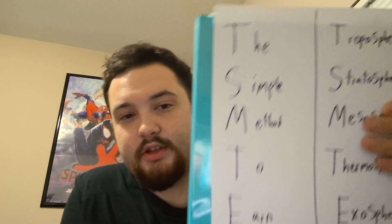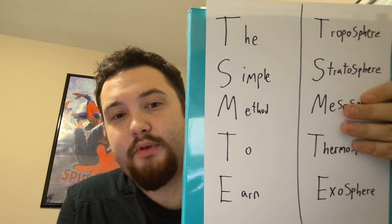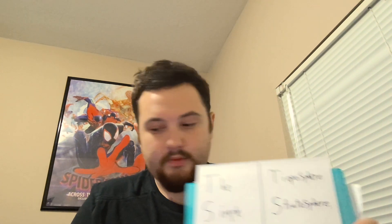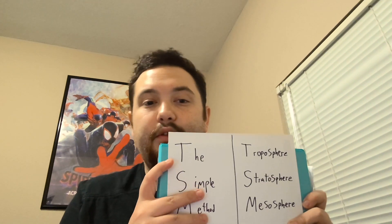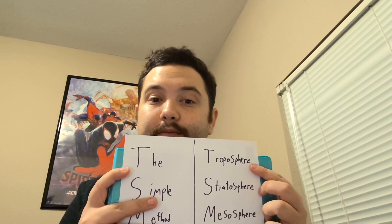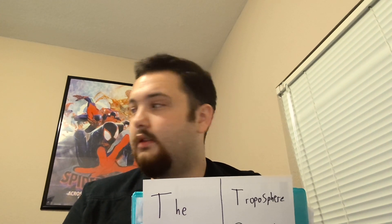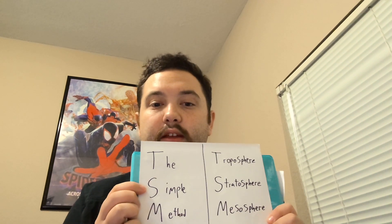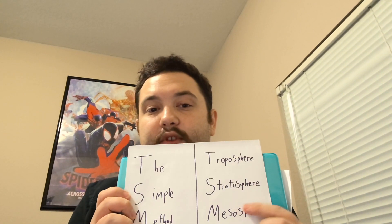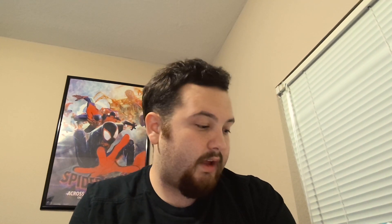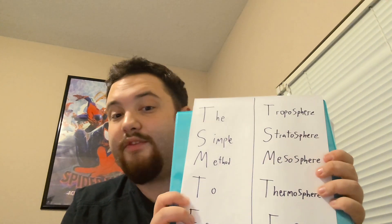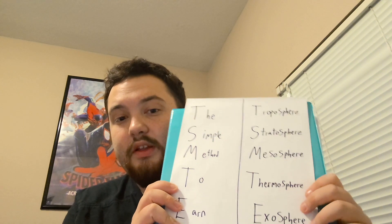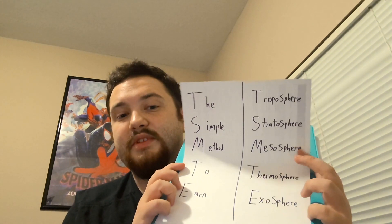And it looks something like this. As you see here: 'The Simple Method To Earn.' The word 'the' represents our troposphere — it's the first layer. After that, 'simple' represents the stratosphere. Then 'method' represents our mesosphere. 'To' represents our thermosphere. And then 'earn' represents our exosphere.